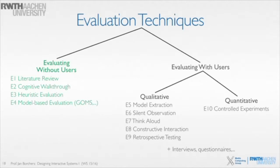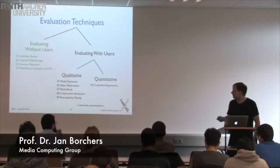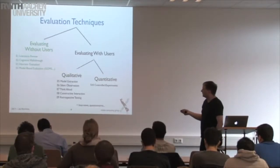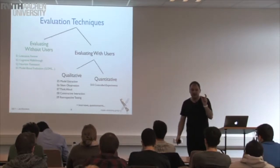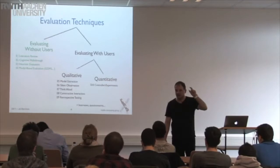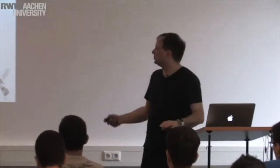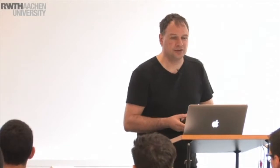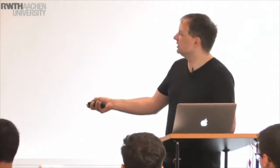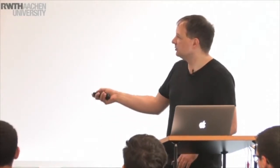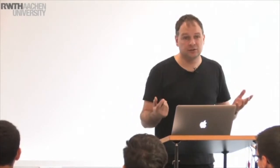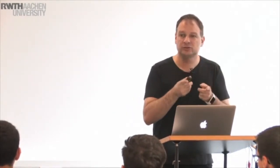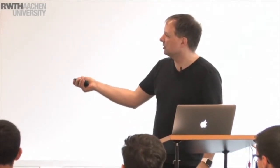Those were all the evaluation techniques available without users. Now, if we want to evaluate with users, we need to think about what kind of result we want. Do we want a precise numerical result, like 'pie menus are 3.5% faster than linear menus'? Or do we want to understand what kind of mistakes people are making with our interface? Most of the time in industry, you're interested in the latter, but in academia, when deciding whether a new interaction technique is better, we often need more precise results.